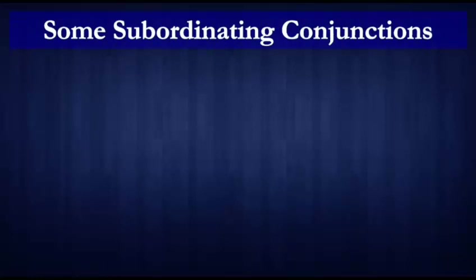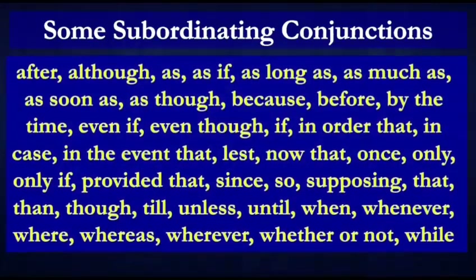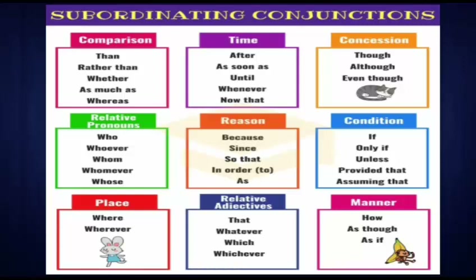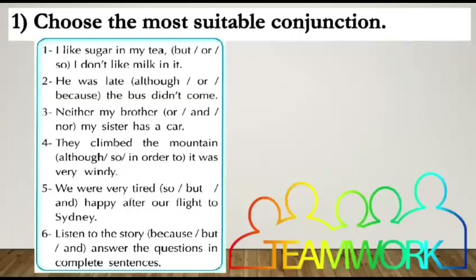These are the third type of conjunctions: subordinating conjunctions. Some examples include: after, although, as, as if, as long as, as much as, as soon as, because, before, and more. We use them for time, place, reason, condition, manner, and so on. Look at the table to see the subordinating conjunctions.